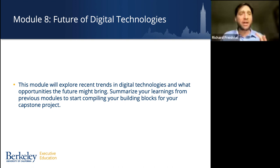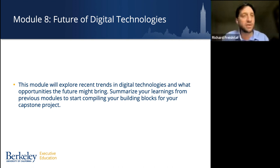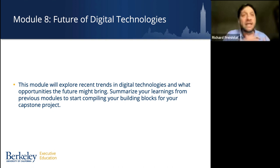Around module eight — about a third of the way through the program — the content begins to shift from purely enabling digital transformation to weaving in a more explicit focus on AI as a tool for business strategy and business innovation. In module eight we bridge that space by looking at future digital technologies: recent trends, what opportunities the future might bring. At this point you start summarizing learnings from the first seven modules and the first couple live sessions, and begin intentionally thinking about what you want to do for your capstone — what opportunity within your firm you want to pitch and implement.